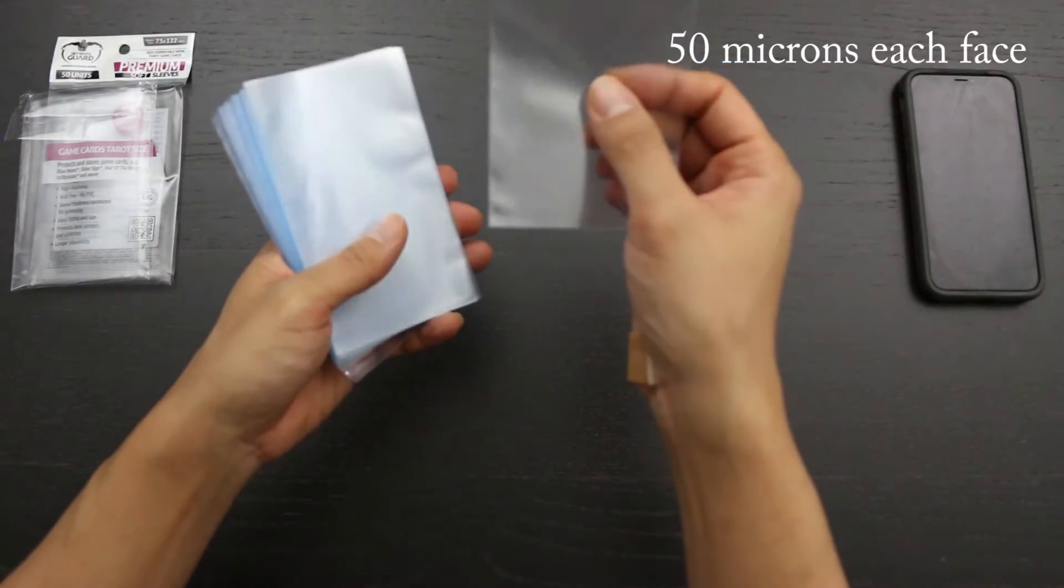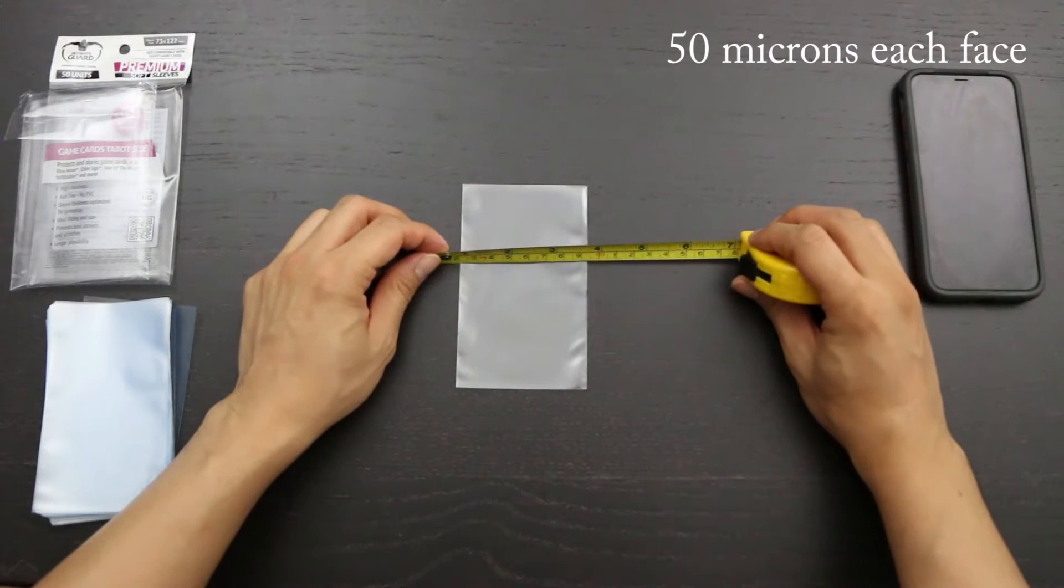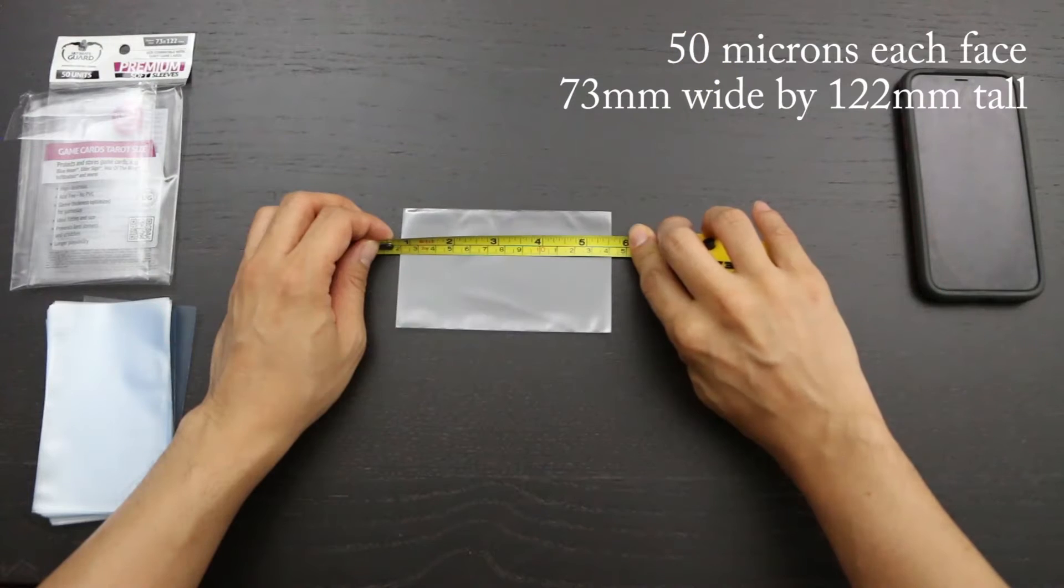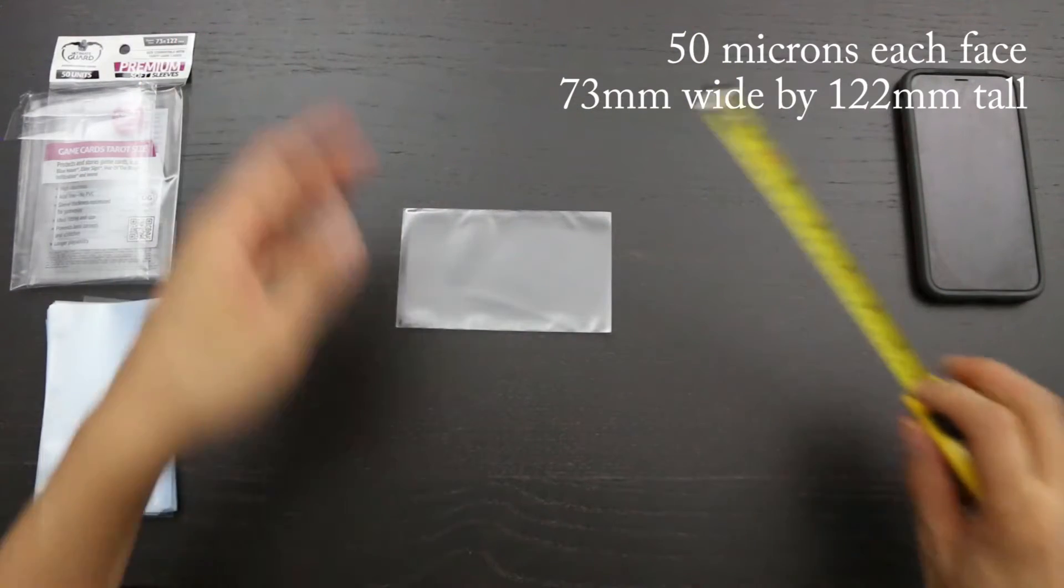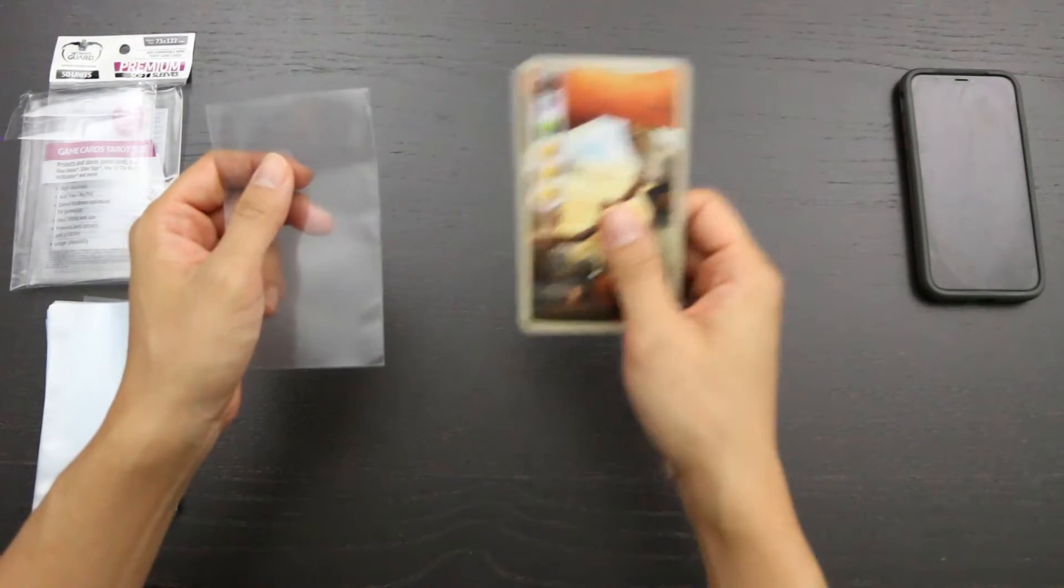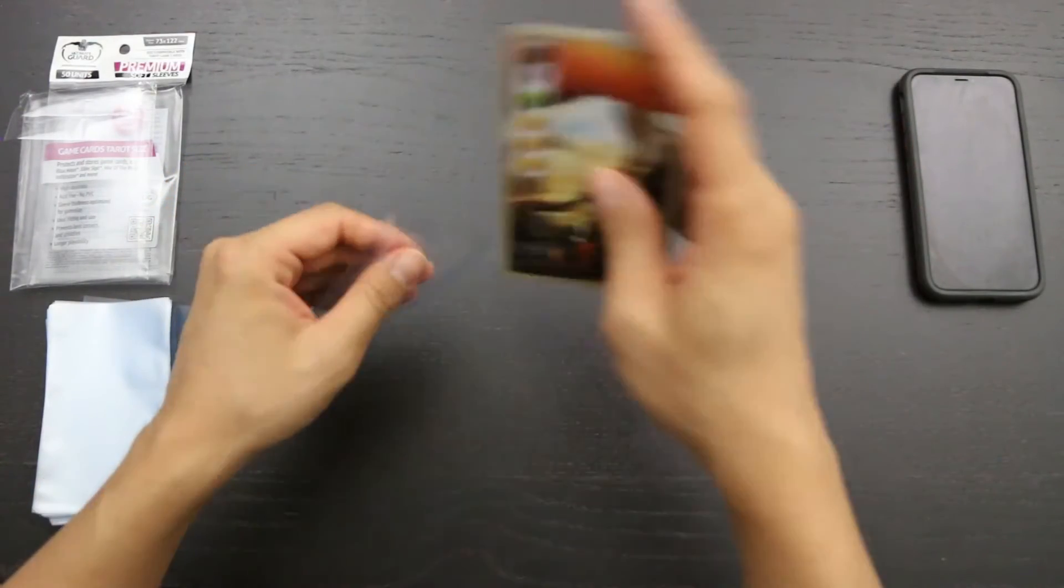Now to check the dimensions, these sleeves are 73mm tall by 122mm wide, just as advertised. Let's see how our card fits. I have one Century Spice Road card here, which is tarot-sized. We'll put it inside the sleeve.